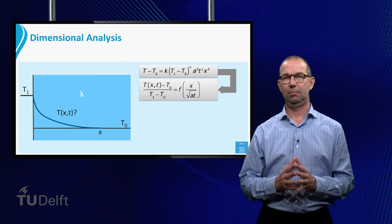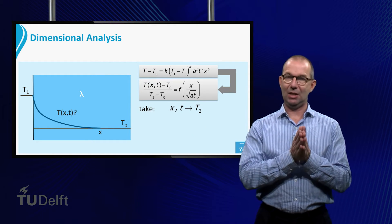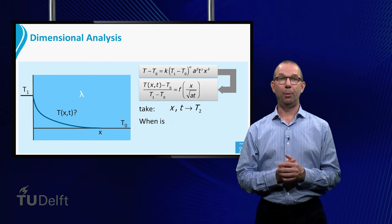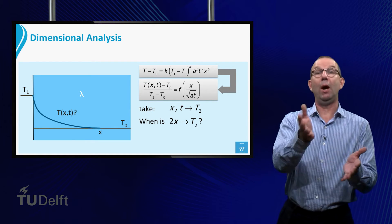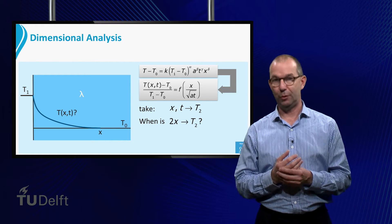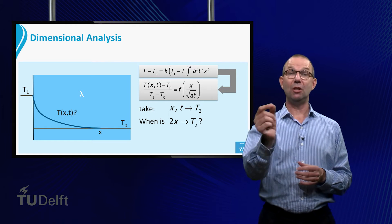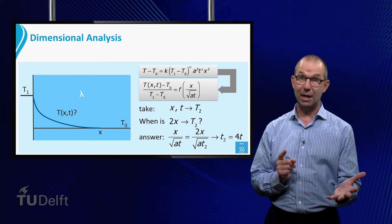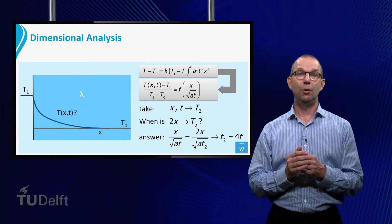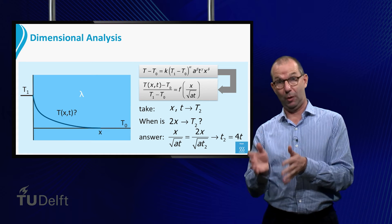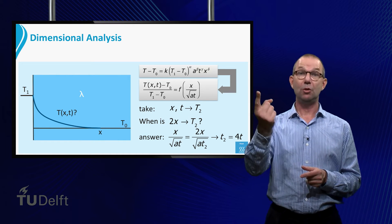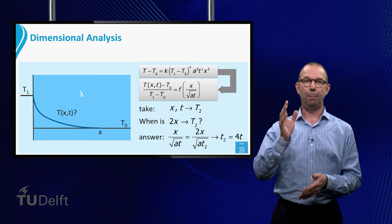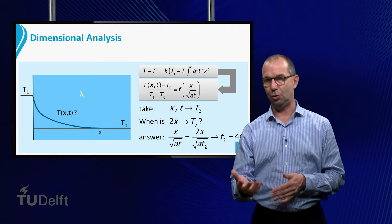What does this tell us? Well, take the temperature at a position x at time T. It has a certain value that we call T sub 2. Next, we look at a point that is twice as far from the left side, so at 2x. At what time would that point have a temperature T2? The dimensional analysis tells us that for a temperature T2 the ratio of x over the square root of A times T must be the same value. Thus, we have for the original point that x over square root of A T must equal the ratio of the new point 2x over square root of A times the unknown time. From this we easily see that the point 2x will have a temperature T2 four times later.